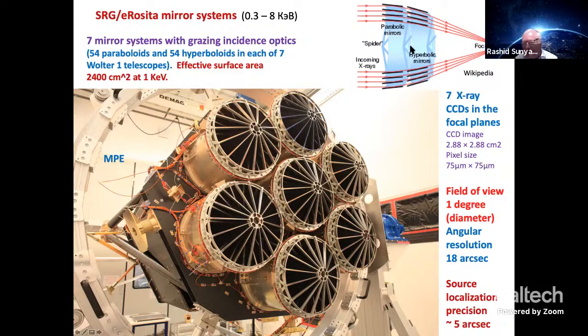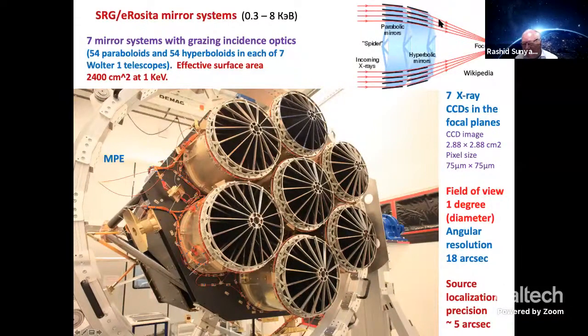This is a parabolic mirror. You see the scattering on the parabolic mirror, then scattering on the hyperbolic mirror, the hyperboloid, and then you are coming to the focal plane. It is really good optics, but you scatter by the mirror only to a very small angle. But because the angle is very small, you can put many, many mirrors made of metals. These mirrors in our case are covered by gold, by a few hundred layers of atomic gold. Then you are getting this good reflection. You see seven independent telescopes here. Every mirror system has 54 paraboloids and 54 hyperboloids. Effective surface area of this huge construction, I told you the diameter is 1.9 meters, is 2,400 square centimeters at 1 keV.